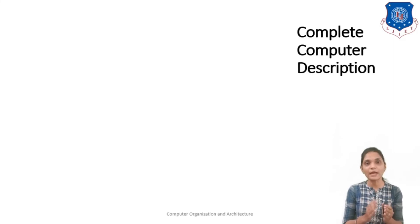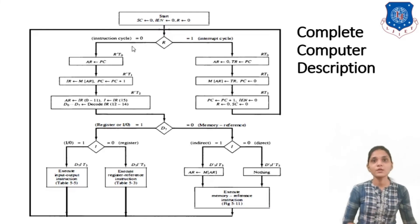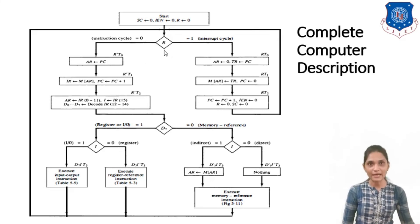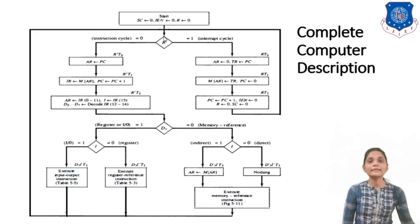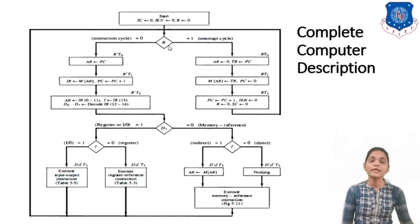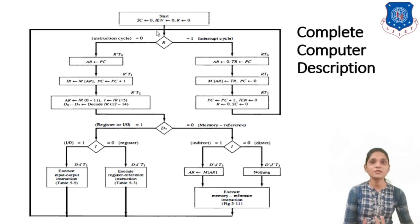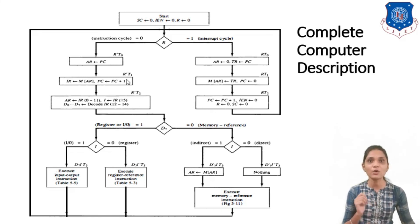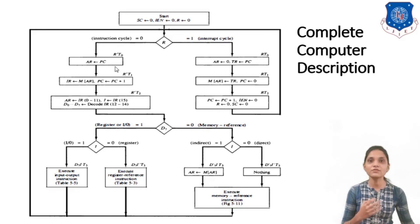So this way we can use this interrupt cycle. Next we will see the complete computer description using this interrupt and normal execution. Both start with the sequence counter at 0. If R is 0 then normal instruction execution occurs; if R is 1 then you execute the interrupt cycle. This diagram is similar to your instruction cycle — the only difference is the R flag. For normal instruction cycle the condition will be R'T0, R'T1, R'T2 and so on, whereas previously we used only T0, T1, T2. Here R' is included in the condition.